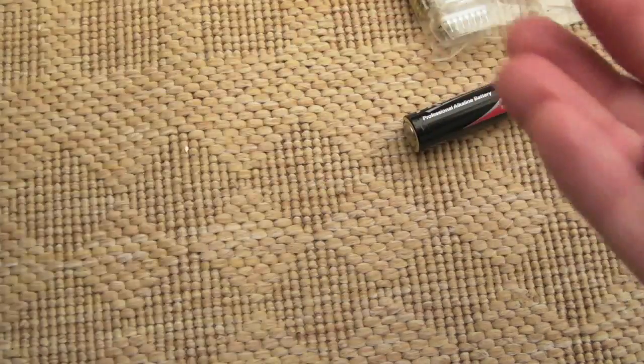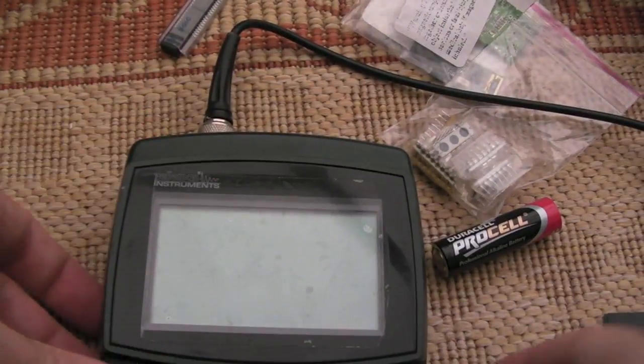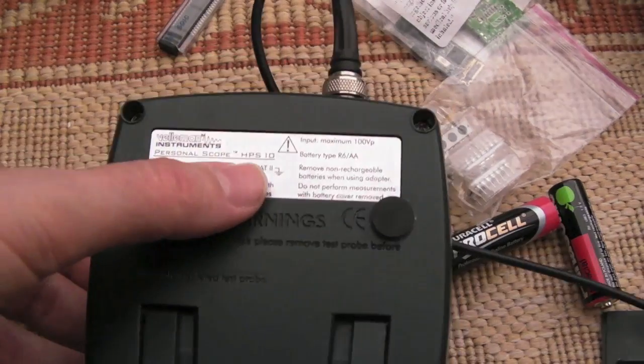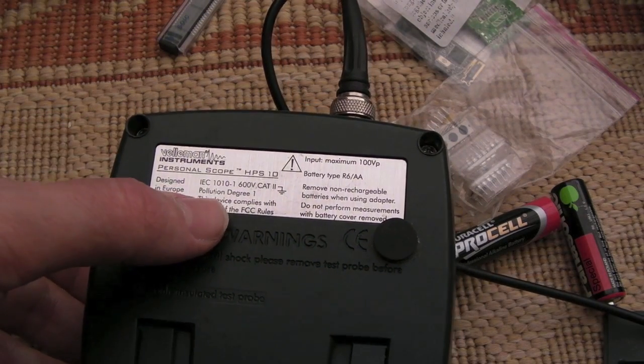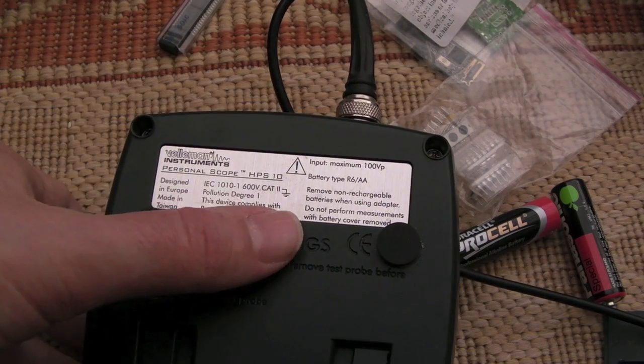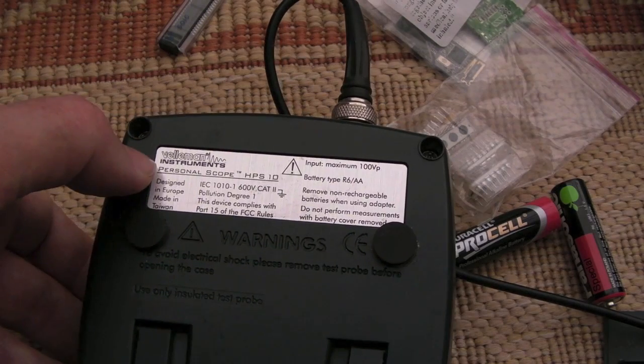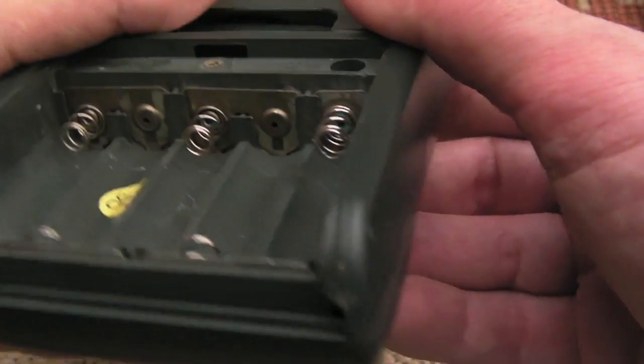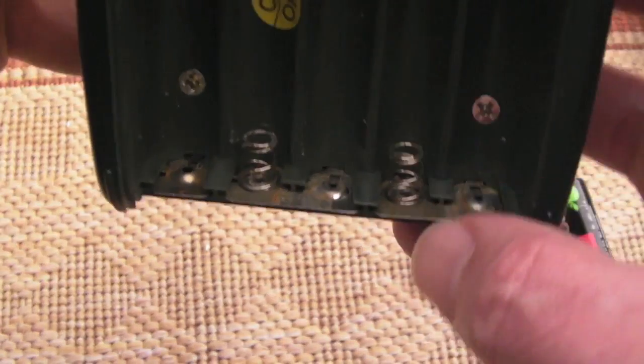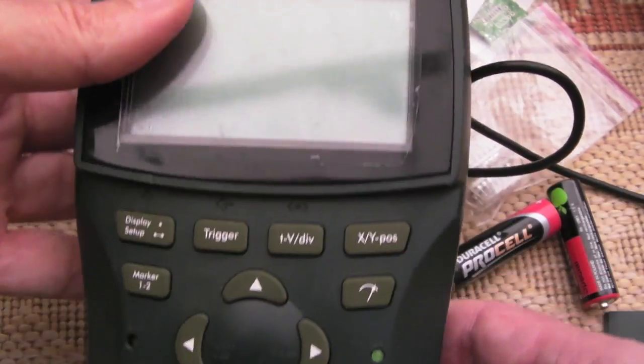But the main thing I wanted to show in this video is this, which is a Vellum Instruments, HPS 10. So it's a personal handheld oscilloscope. It's rated, I think it goes up to 10 megahertz or something like that. It might be 20 megahertz. I think it's 10 megahertz to be fair. 600 volt Category 2 battery type AA. You can see the problem here again.